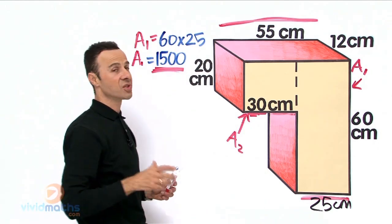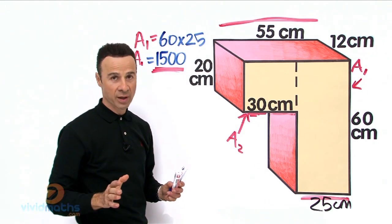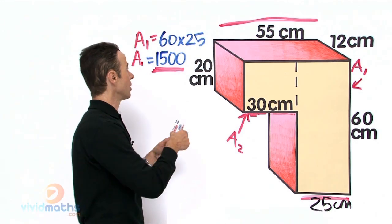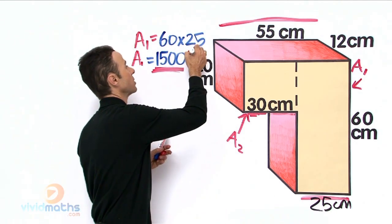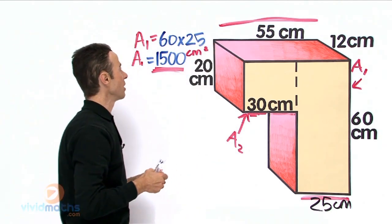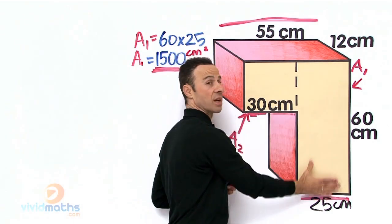So that is going to give us 1500. Okay, that is area one. Area one is 1500 cm squared because it is in the units of cm squared, because that is an area. So that is area one all the way across there, can you see that?